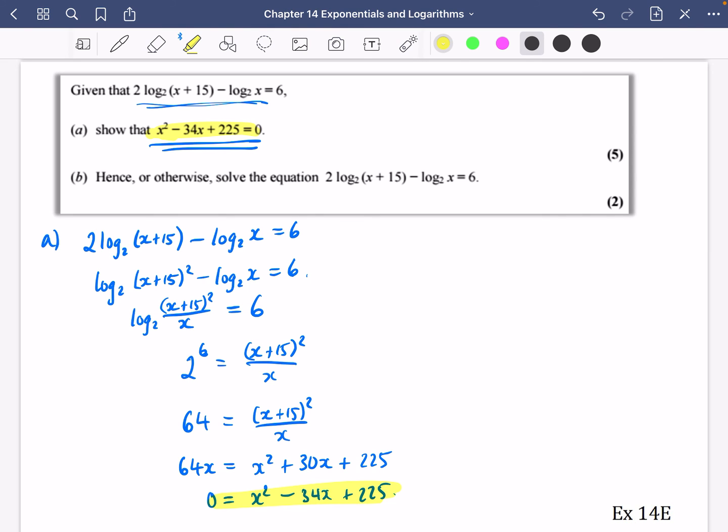So then it says hence or otherwise solve this equation. Well, this equation is the same as this equation. So instead of solving this, just solve the quadratic instead. And you've got calculators that will do this for you. So I'm going to put into my calculator the coefficient of x² is 1, minus 34, and 225. So we get that either x is equal to 25 or x is equal to 9. Now, it seems like both of these are going to be valid because 25 and 9 is not going to make this negative.